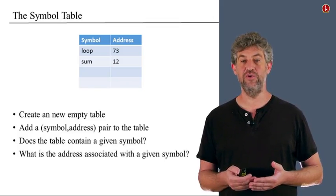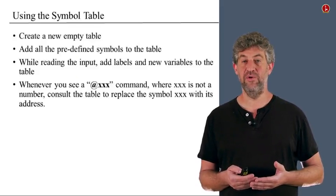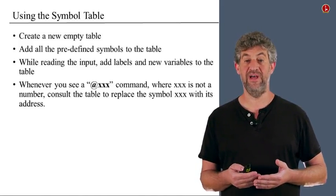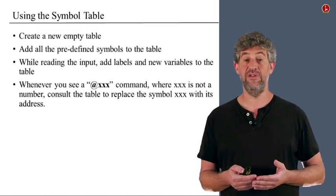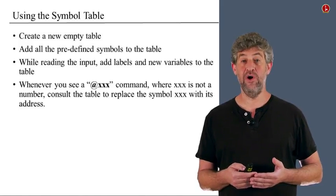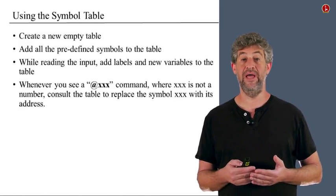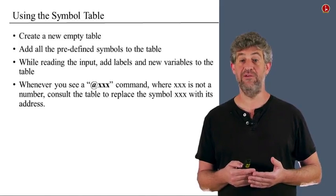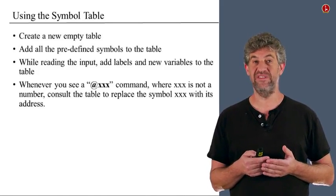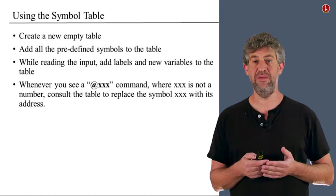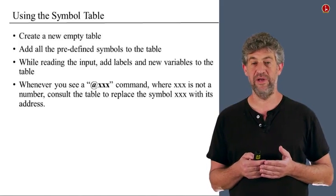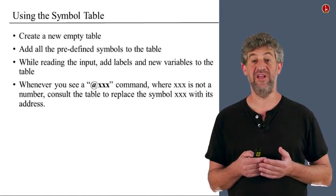How are we going to use this symbol table? We start by creating an empty symbol table. In the Hack assembly language, there are a bunch of predefined symbols such as keyboard and so on, so the first thing we do is add all these predefined symbols to the table. Then as we read the program and translate it, we add labels and variables to the symbol table whenever we see them. Whenever we see an A command with a symbol, we look up the symbol in the table and get a direct translation to a number. The key question is: how do we put the labels and variables into the table?